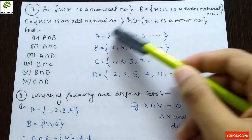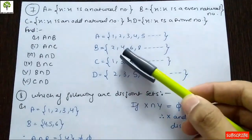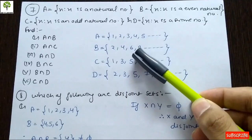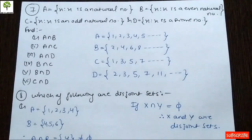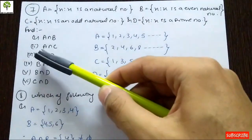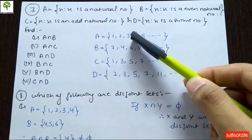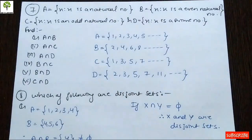A is the complete set of natural numbers and B is the set of even natural numbers. When we find the intersection of A and B, the common elements are 2, 4, 6, 8, 10 and so on — all even numbers. Similarly for the second part, A intersection C, we find the common elements between both sets.